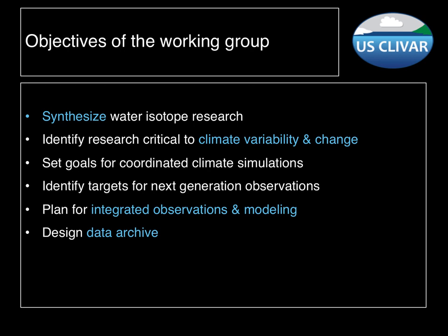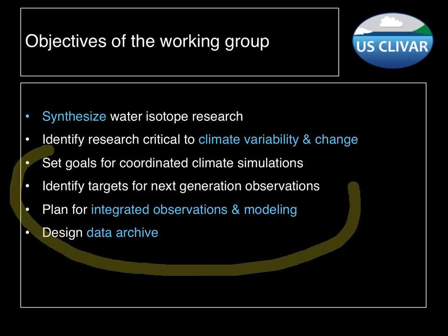Back to our list of specific objectives: some of the things we're working on right now are setting goals for climate model development and observational networks, planning for integrated observational and modeling experiments, and also developing some sort of data repository or archive where we can store the information generated from those integrated experiments. We have a couple of projects going on right now and coming up in the near future that are really helping us address these.